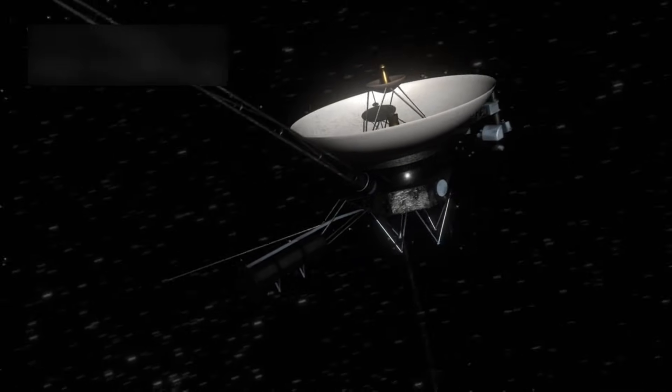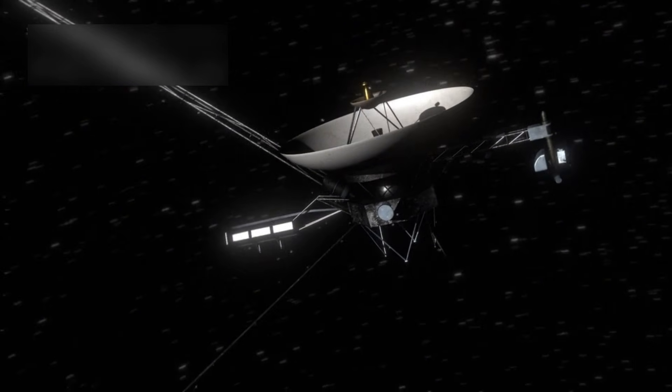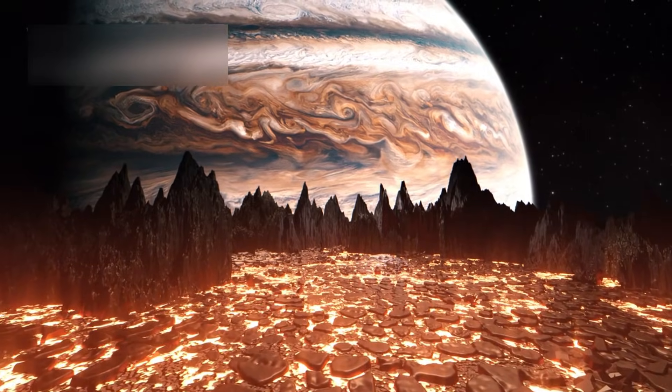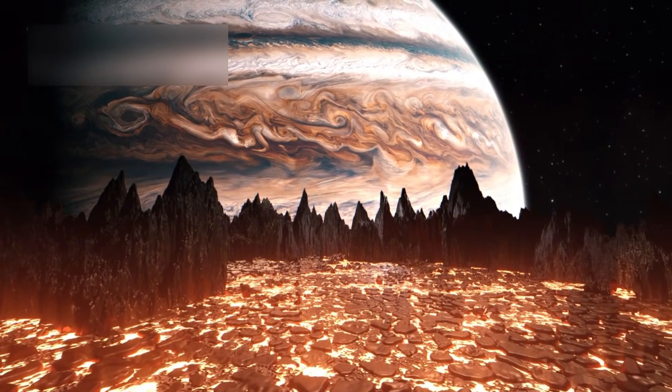Its close-up images of Jupiter's storms and Saturn's rings transformed how we see the outer solar system. It even discovered volcanic activity on Jupiter's moon Io, which was the first time active volcanoes were seen beyond Earth.